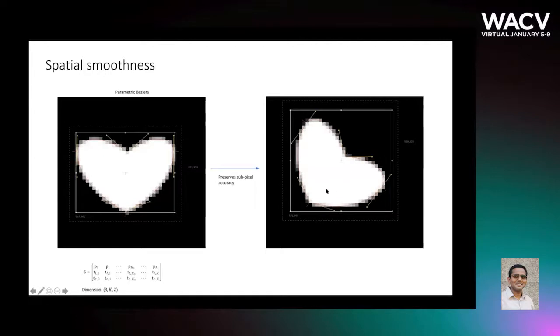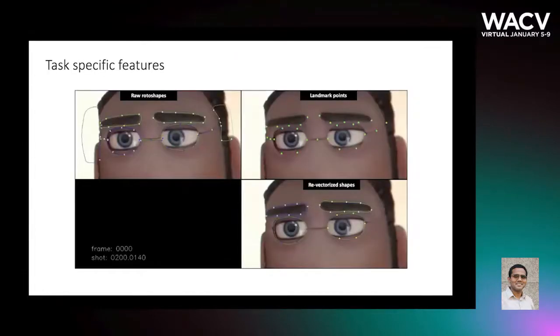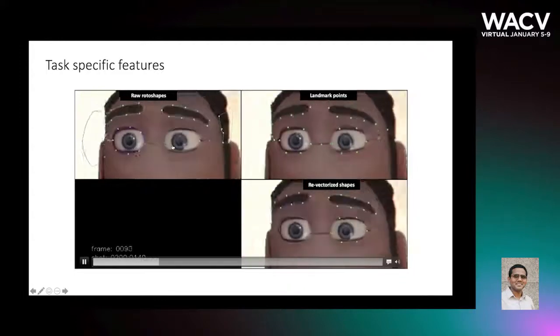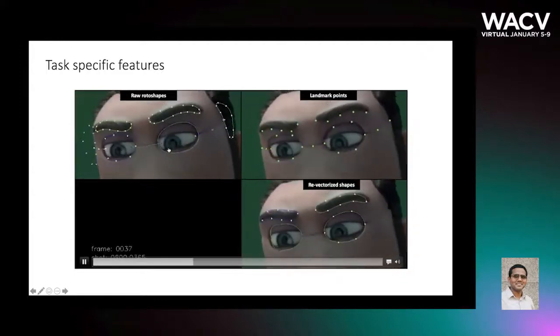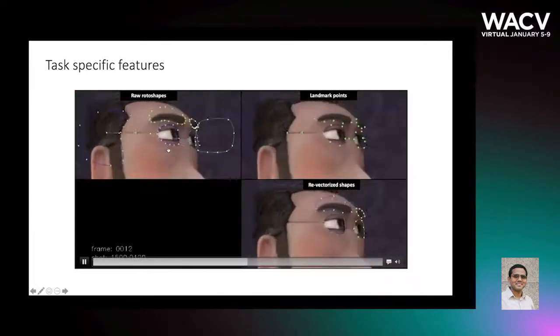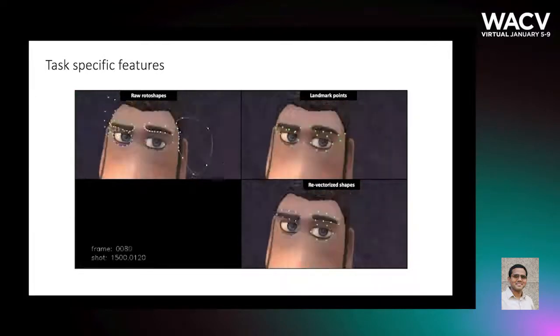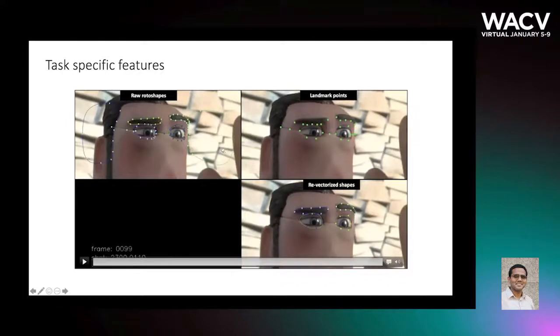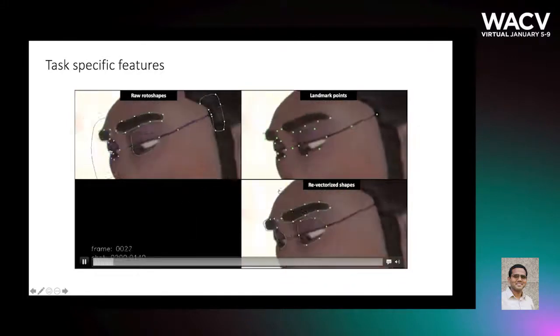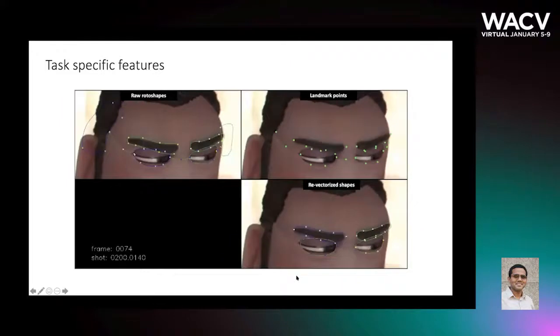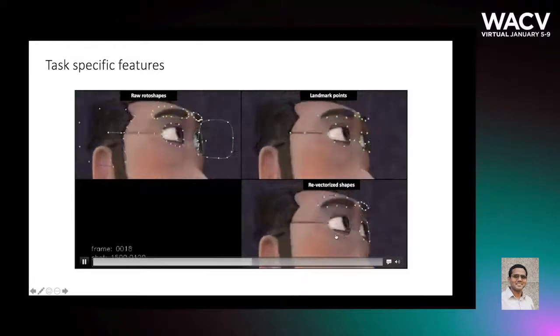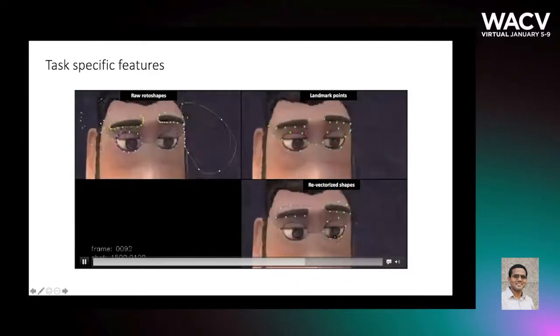The raw assets from a compositor's workspace consists of contours with arbitrary points and tangents that are not semantically consistent and hence not trainable. Given several instances of a similar task, our first step is to identify the interactions among shapes and harvest a set of semantically consistent landmark points. We then re-vectorize the original contours based on these landmark points to obtain a new consistent representation. The resulting set of points and tangents are considered to be the relevant features for this task and together with the image constitute the ground truth data which is now ready for training.